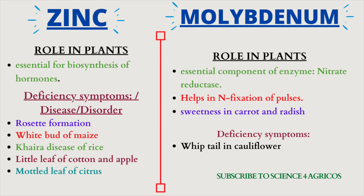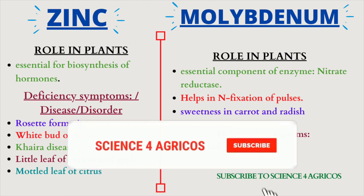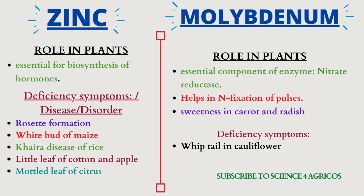Now let's learn about zinc and molybdenum. Zinc is essential for the biosynthesis of hormones. Deficiency disorders include rosette formation, white bud of maize, khaira disease of rice, little leaf of cotton and apple, and mottle leaf of citrus. Molybdenum is an essential component of the enzyme nitrate reductase; it helps in nitrogen fixation in pulses and increases sweetness in carrot and radish. Molybdenum deficiency causes whiptail in cauliflower.